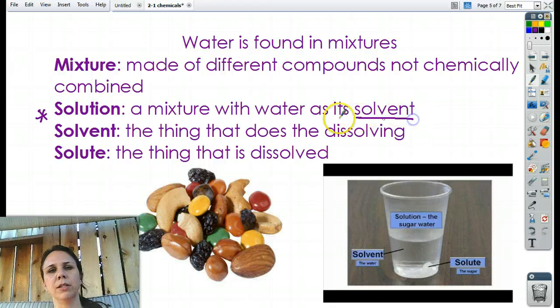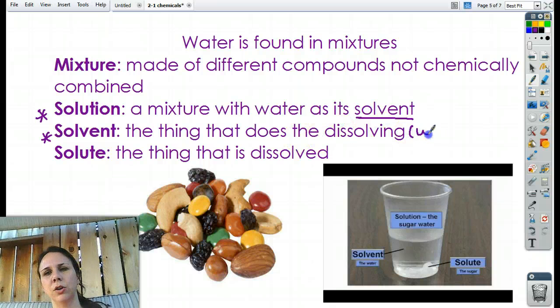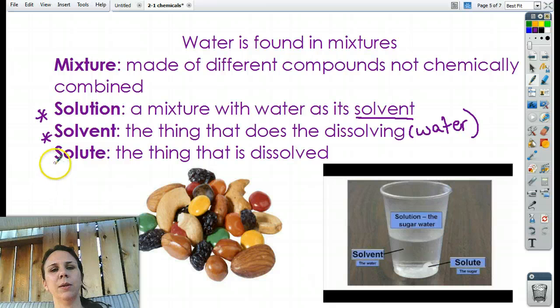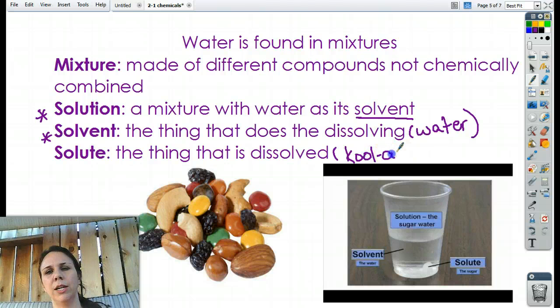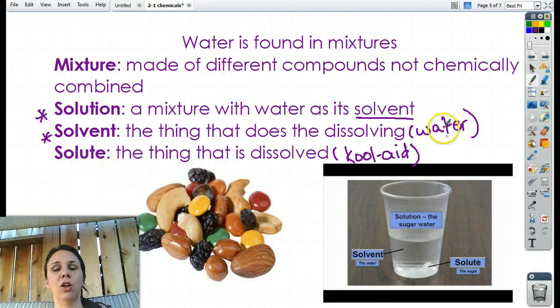Now, what is this word solvent? Solvent means the thing that does the dissolving. So, that would be water. Water is a solvent. And then we have something called the solute, which is a thing being dissolved. So, you know, as a kid, you like to make Kool-Aid. You take the powder and pour it into water. The powder is the solute, and the water is the solvent.